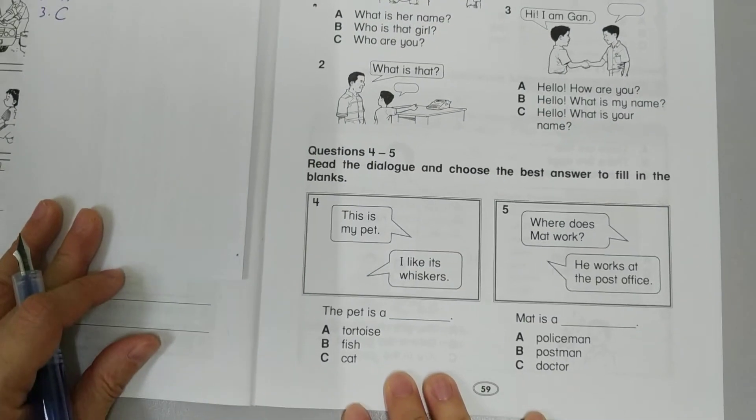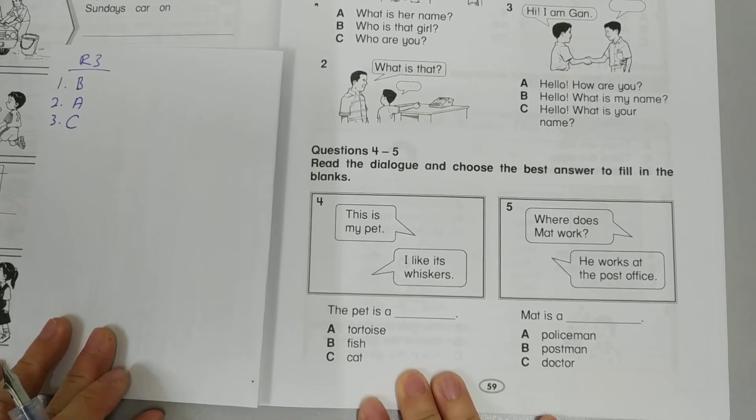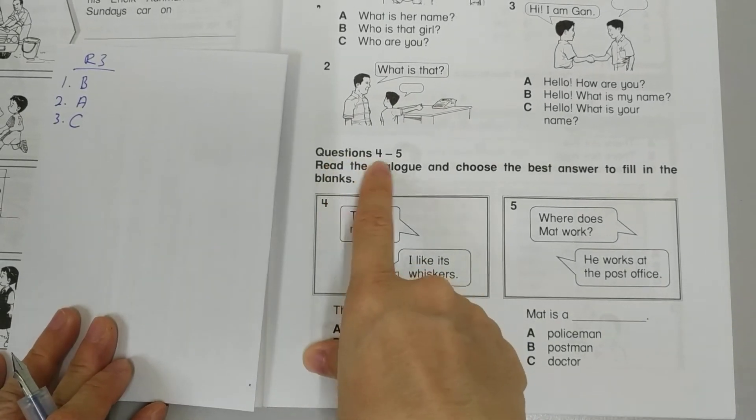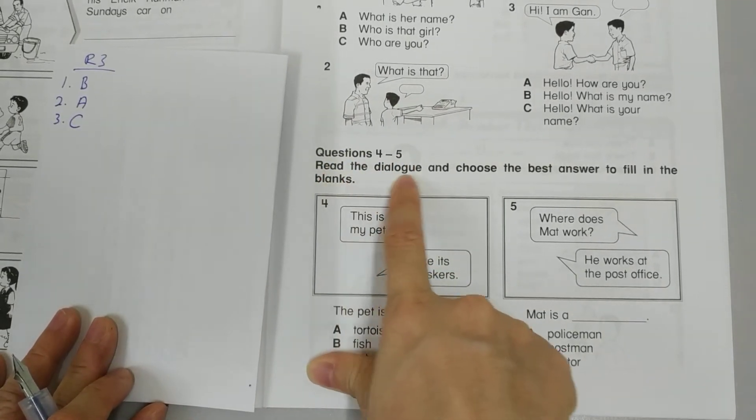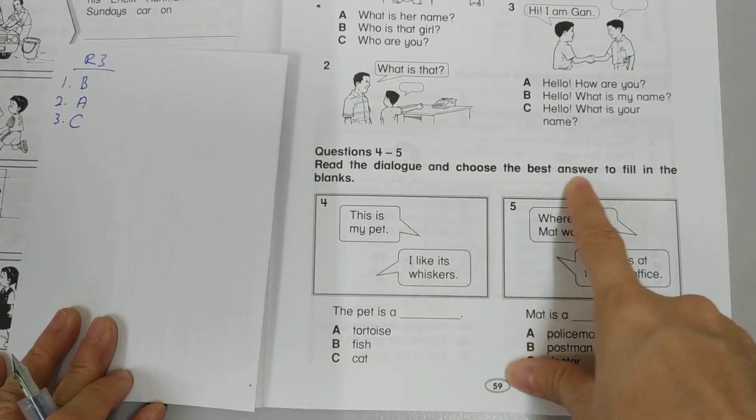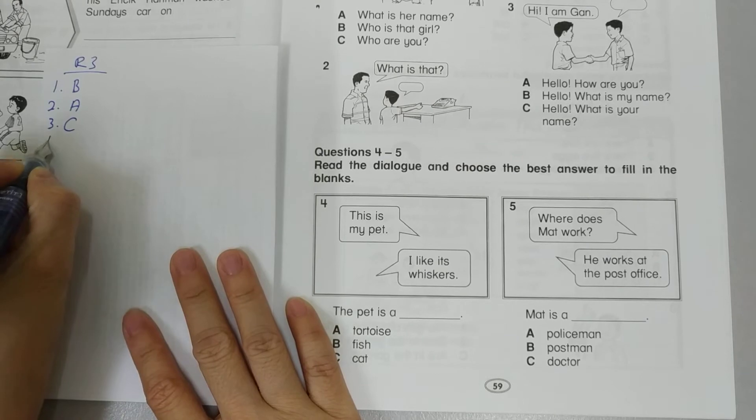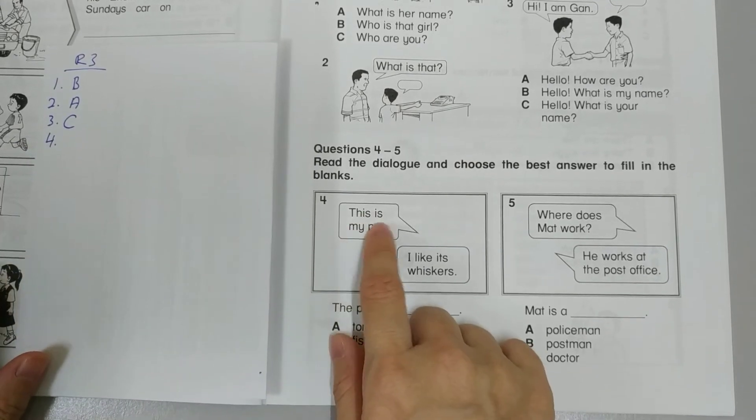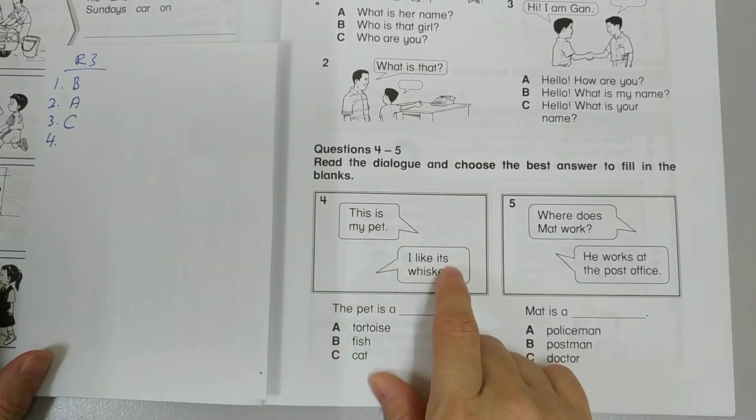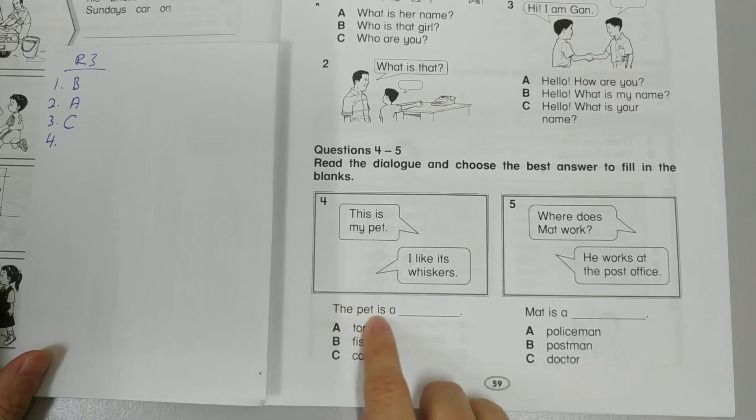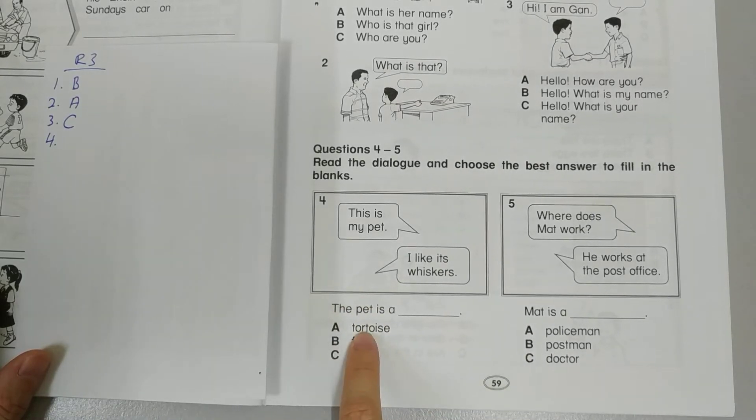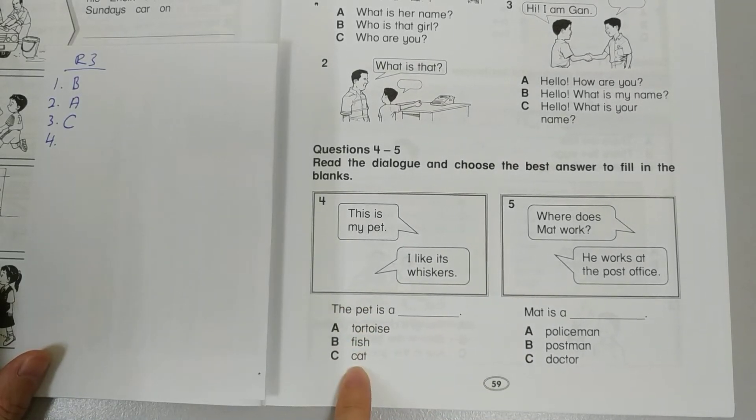Now let's look at number 4. For questions 4 and 5, it says, read the dialogue and choose the best answer to fill in the blanks. So number 4, this is my pet. I like its whiskers. The pet is a. So which animal has whiskers? The cat.